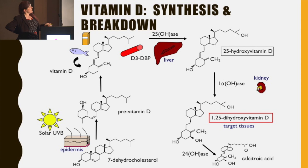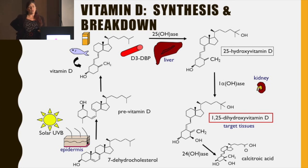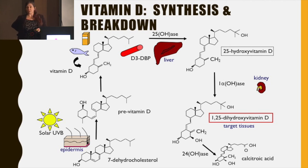And then vitamin D in the circulation gets to the liver, where it is hydroxylated on the 25-carbon atom. And 25-hydroxyvitamin D is not the active hormone, but it is the hormone we measure. It circulates in nanomolar concentrations and is relatively stable on a day-to-day basis. These days we have quite reasonable assays, so we can actually measure it — which is good. 10 or 15 years ago, some of the assays were excellent random number generators.